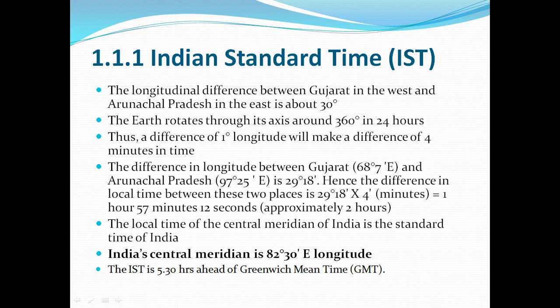The local time of the central meridian of India is taken as the standard time of India. India's central meridian is 82 degrees 30 minutes east longitude. The IST is 5 and a half hours ahead of Greenwich Mean Time.